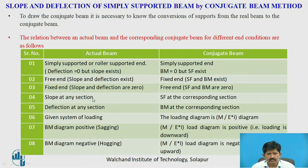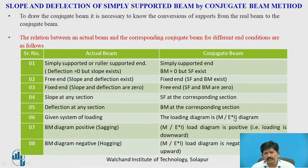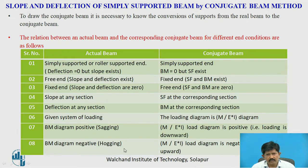The slope at any section in the real beam will be the shear force at the corresponding section in the conjugate beam. Deflection at any section in the real beam will be the bending moment at the corresponding section in the conjugate beam. If the bending moment diagram is positive (sagging) in real beam, the M upon EI load diagram acts downward. If negative (hogging), the M upon EI load diagram acts upward.